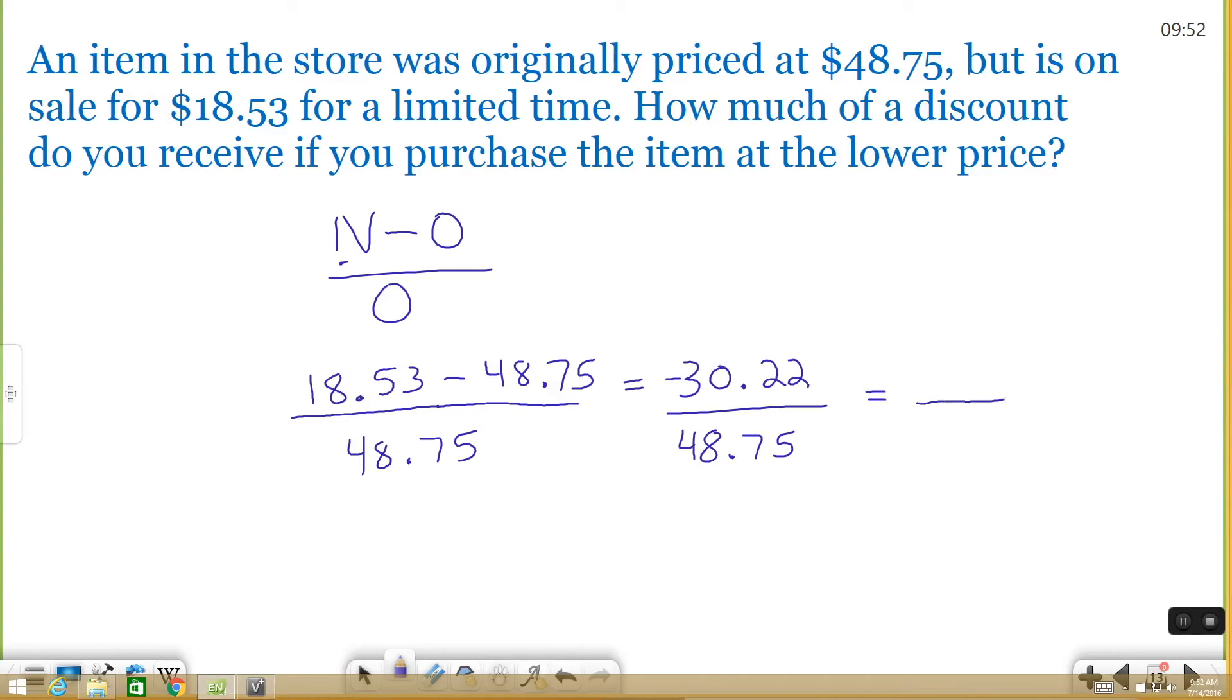So if you type this in your calculator, you're going to get negative 0.62. Negative 0.62, I can turn it to a percent by just moving the decimal point to the right twice. The reason why it's negative is because your price went down. So it decreased in value, so to speak. That sign doesn't really make a difference in your answer because you're just looking for the amount of discount you received, which is the percentage. In this case, my percent is 62. So if I buy this item for $18.53, it's a 62% discount from its original price.